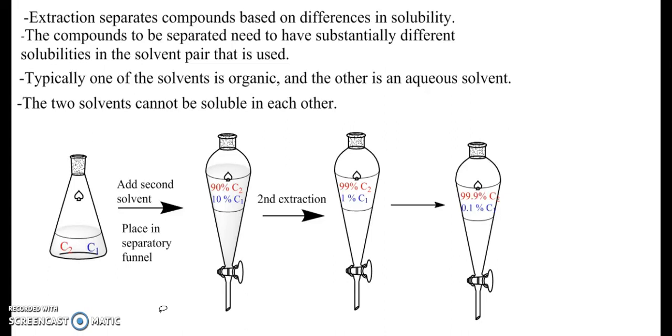Now one complication with extractions like this is often for a simple extraction as depicted here, it's hard to find a solvent pair that will have as good a separation as indicated here—ten percent of one compound, ninety percent of the other compound. A lot of times we have to use other tools to help adjust the solubility of one compound versus another. One particular example of this is something called an acid-base extraction.